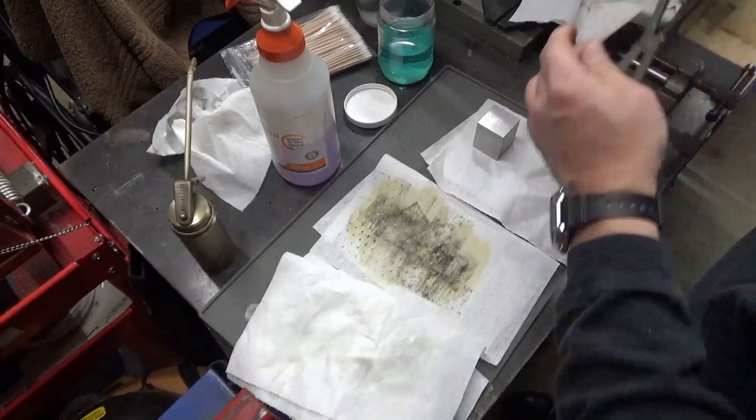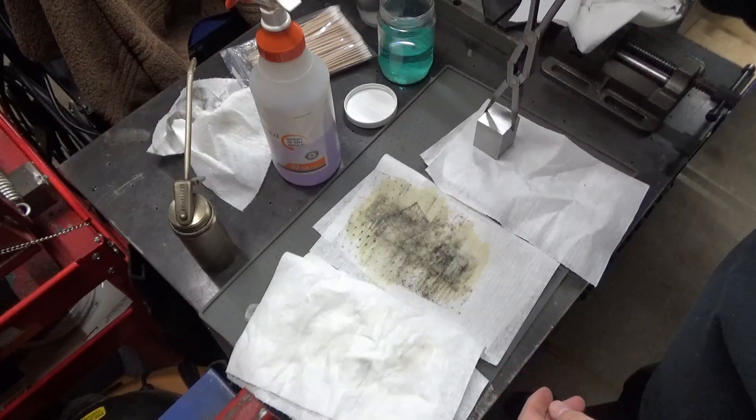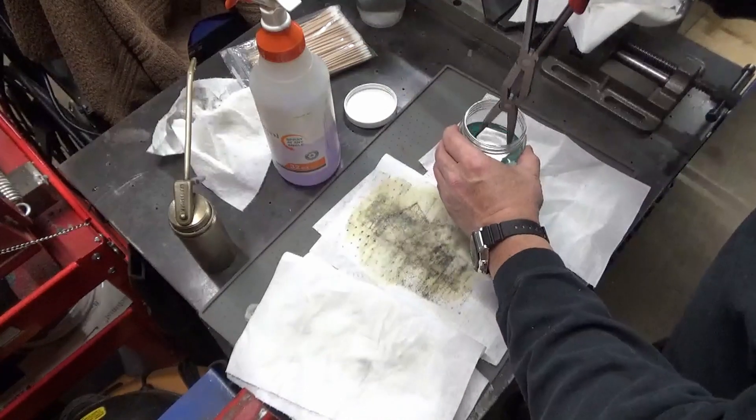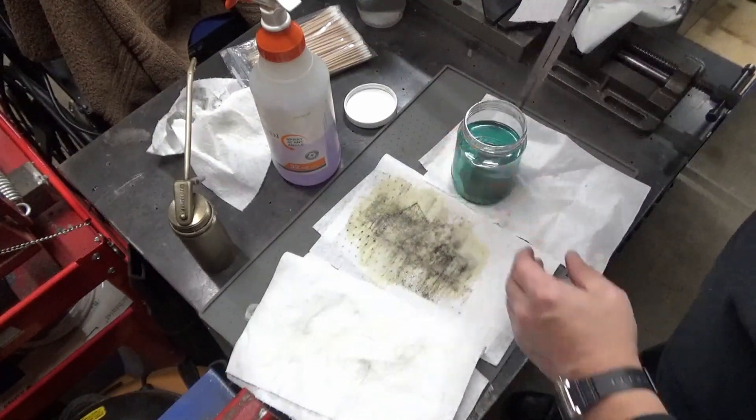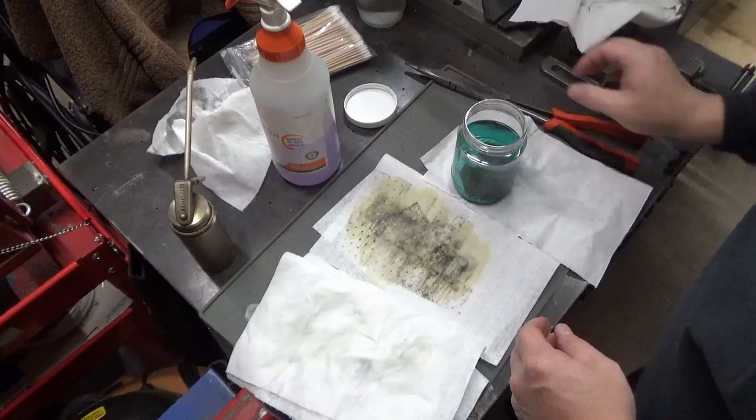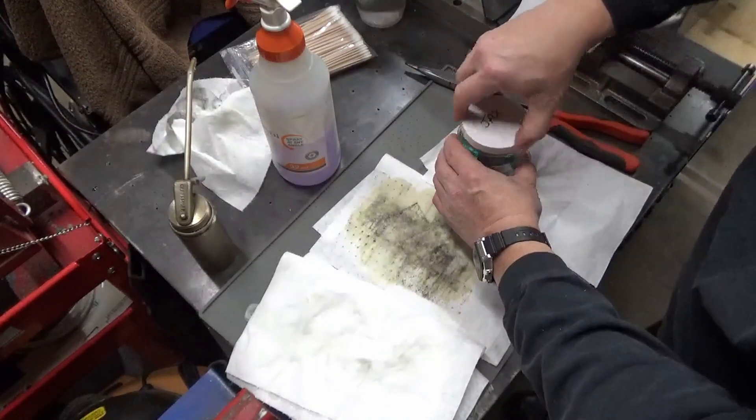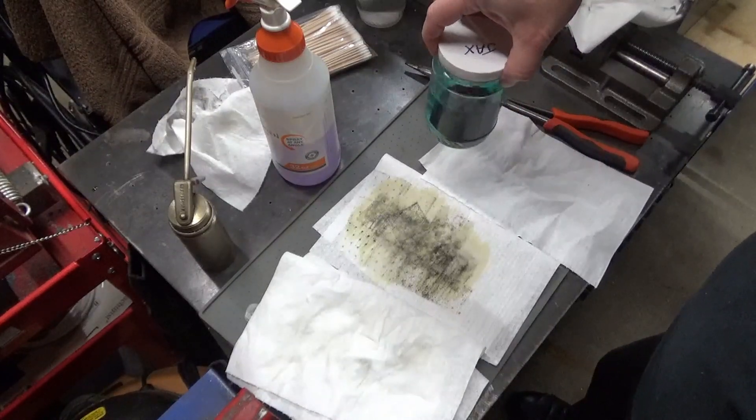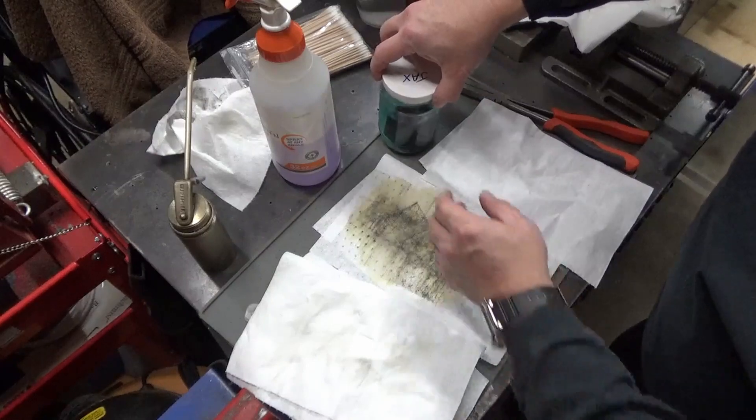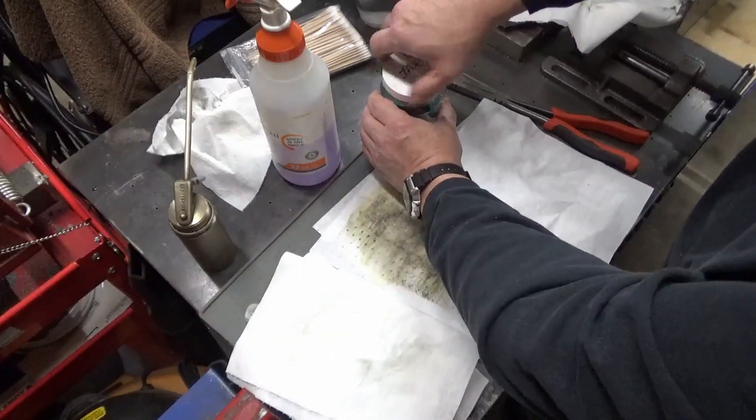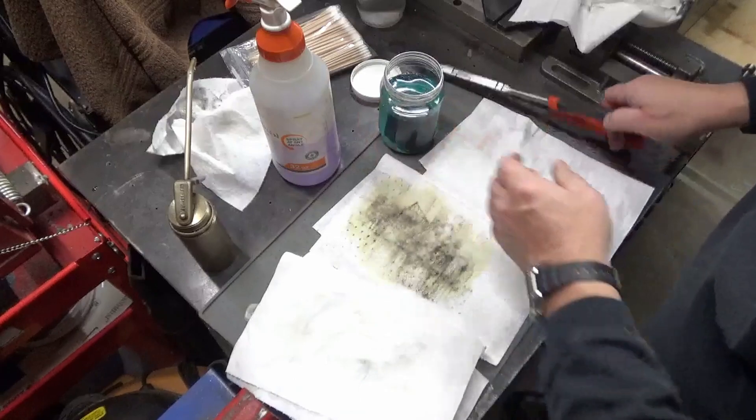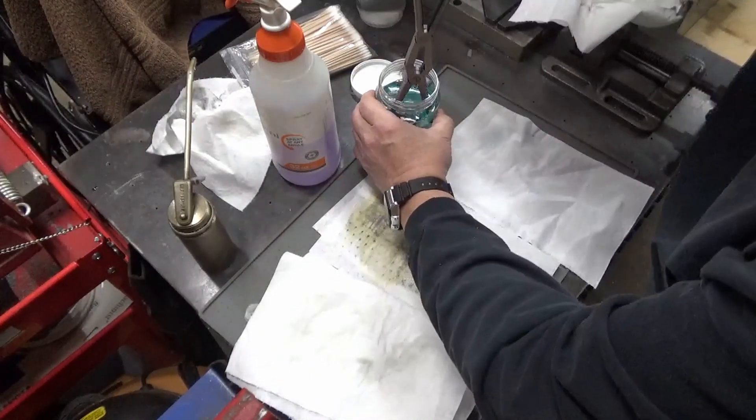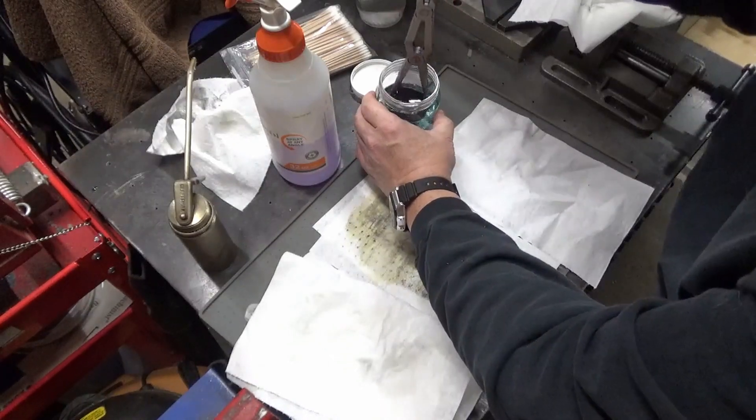And now we will just dunk it in the bottle of Jack's Chemical Bluing Compound. Give it a little swirl. And now we'll take it out. Take it inside. Rinse it off with hot water.